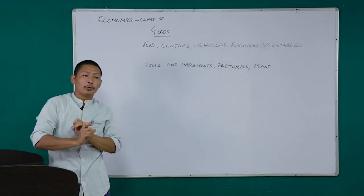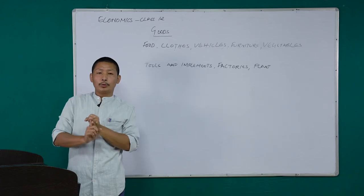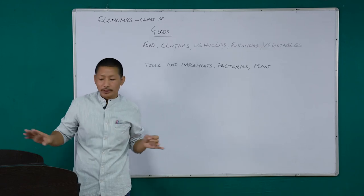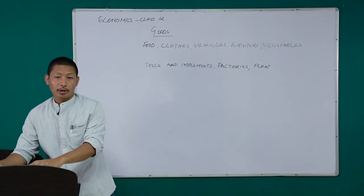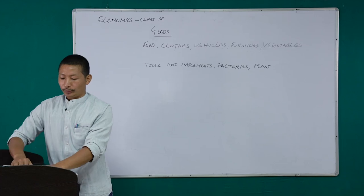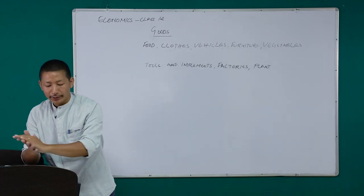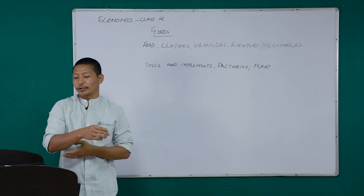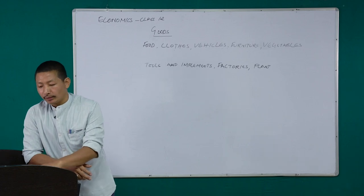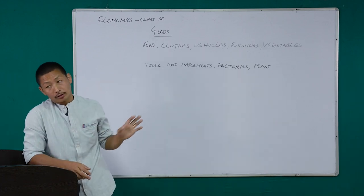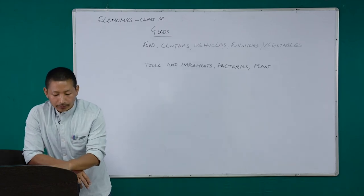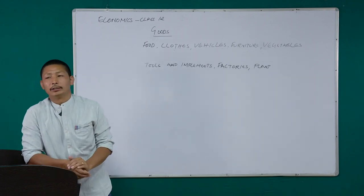To summarize: durable goods are those goods which give services over time. Non-durable goods are single-use goods, completely used up at the time of use. I am sure you are now able to differentiate between consumption goods and capital goods. Following the textbook, the next topics are final goods and intermediate goods.